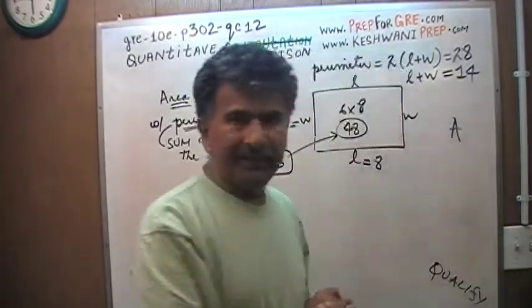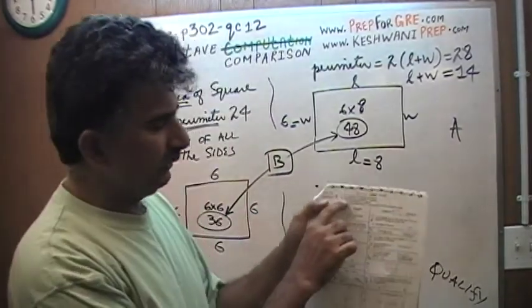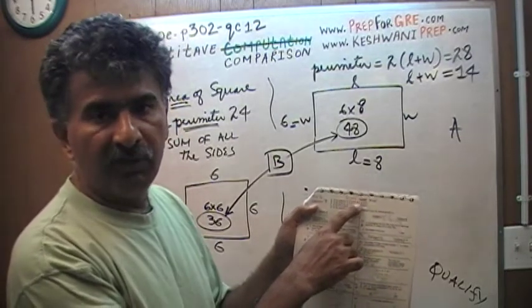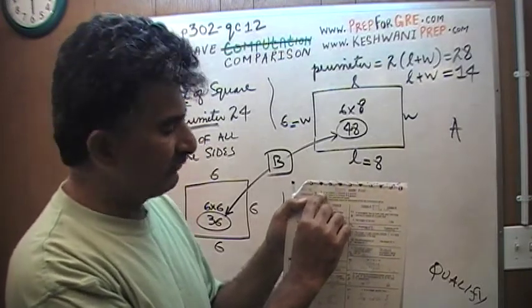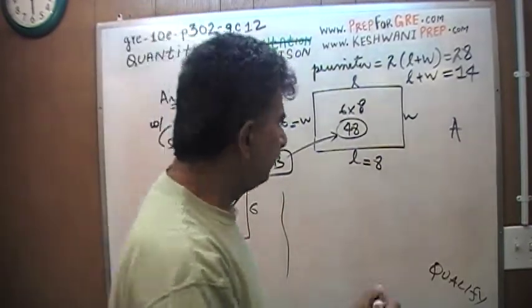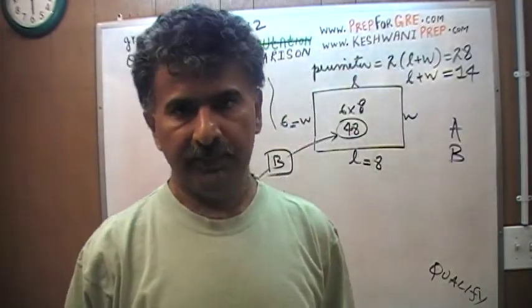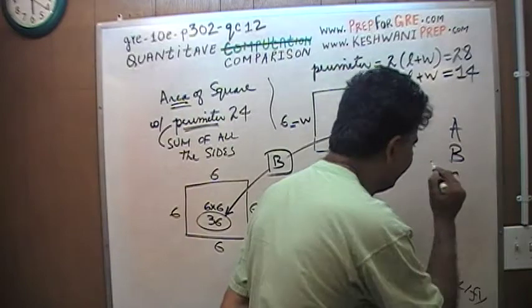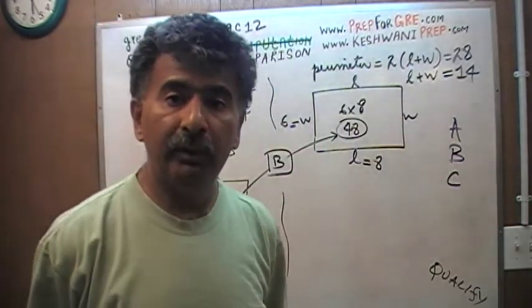What does it mean when you pick answer choice A? When you pick A, what you're claiming is that the quantity in column A is always greater. When you pick B, what you're claiming is that the quantity in column B is always greater. And if that claim turns out to be wrong, then that answer is wrong. When you pick C, what you're claiming is that the two quantities are always, always, always equal.